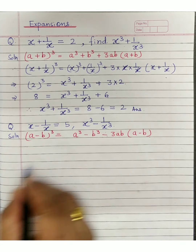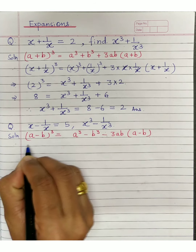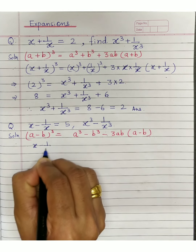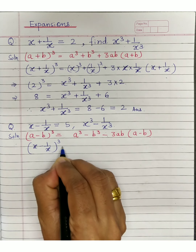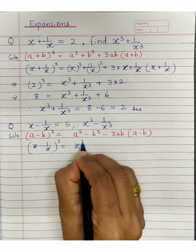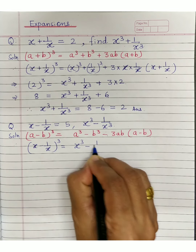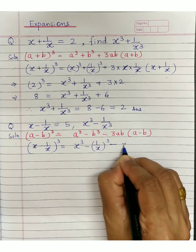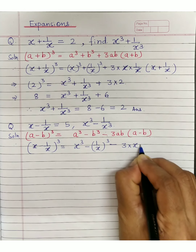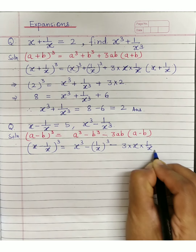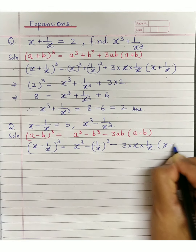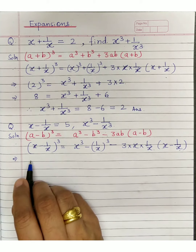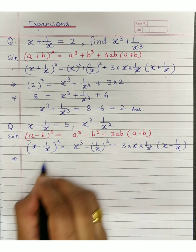So x minus 1 upon x whole cube becomes x cube minus 1 upon x cube, minus 3 into x into 1 upon x, bracket x minus 1 upon x. The next step is to substitute the values: x minus 1 upon x is 5.